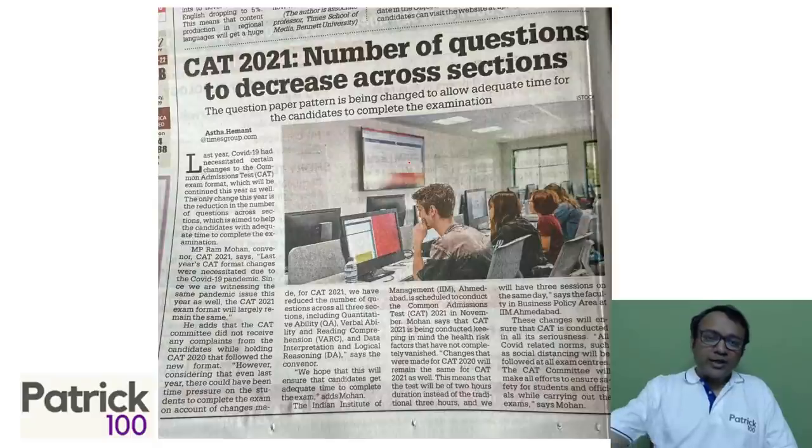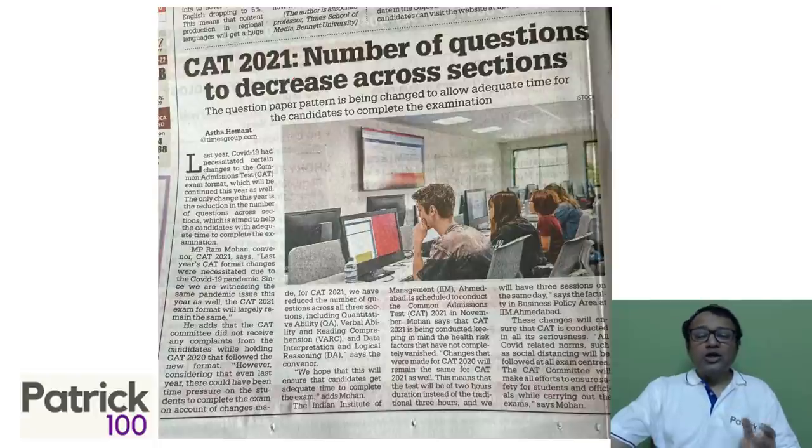So there was a news article which came out today saying that a number of questions are going to decrease across sections. This came in a Times group paper. So how and what would be the paper pattern in that case?